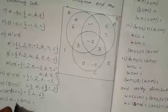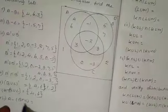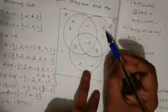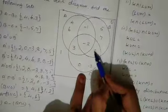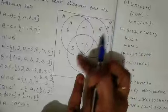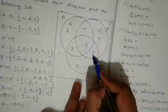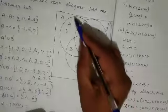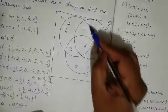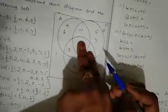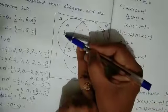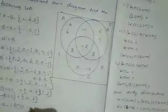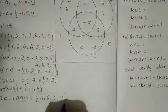Sixth question: A minus (B intersection C). First find B intersection C — the common elements between B and C, which are {-2, 8}. Then from set A, subtract B intersection C. The remaining elements in A after removing -2 and 8 are {4, 6, 3, -1}. That is the answer.